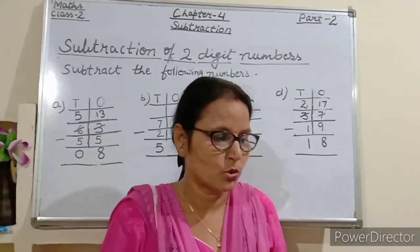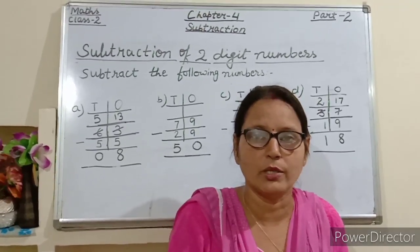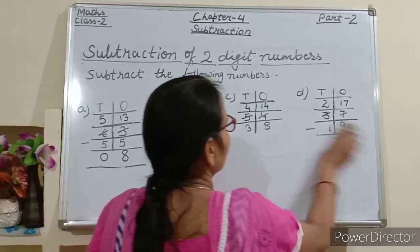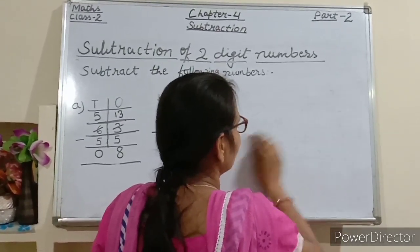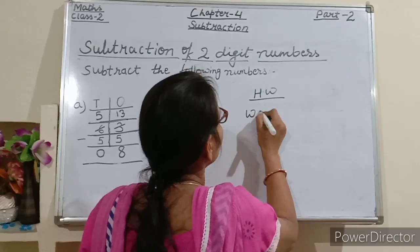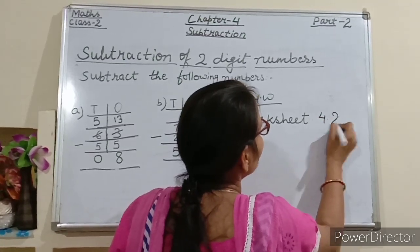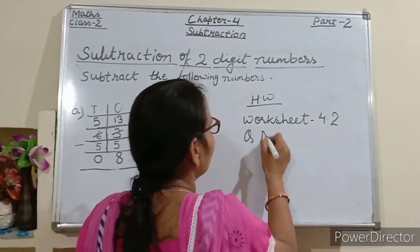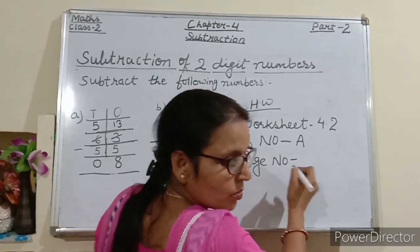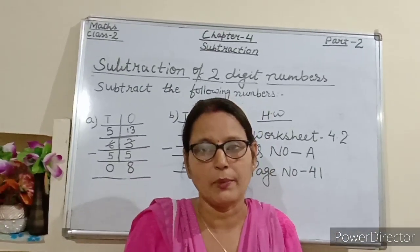Today I have taught you subtraction of two-digit numbers. Now I am giving you homework to do in your application book. Write down your homework: Worksheet 4.2, Question number 8, page number 41. Do your homework in your application book.